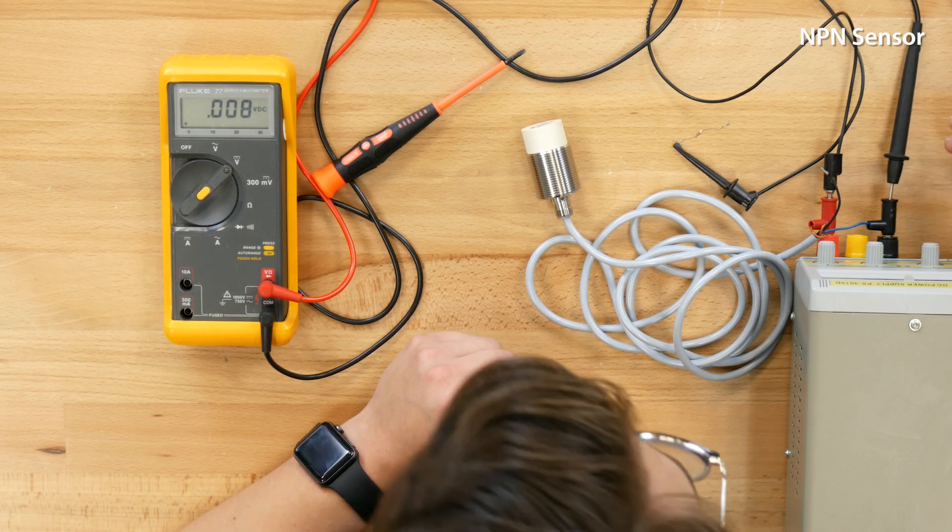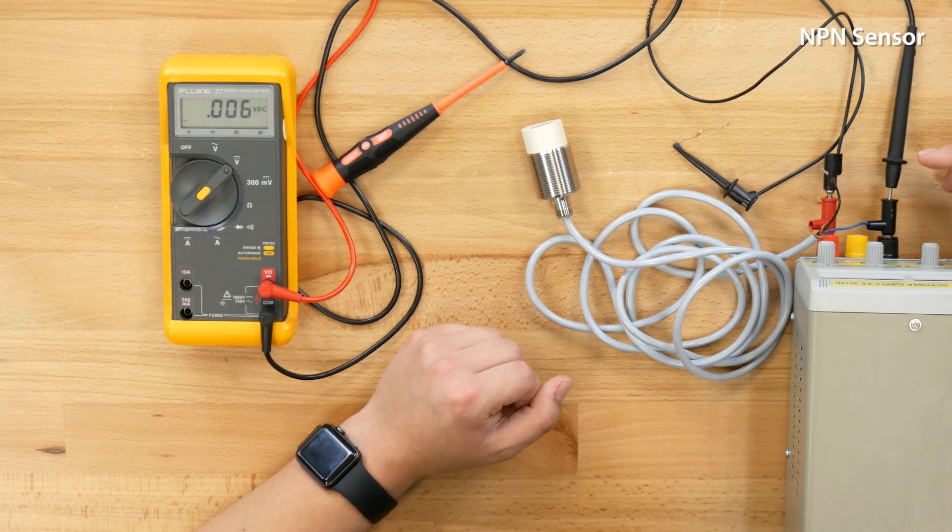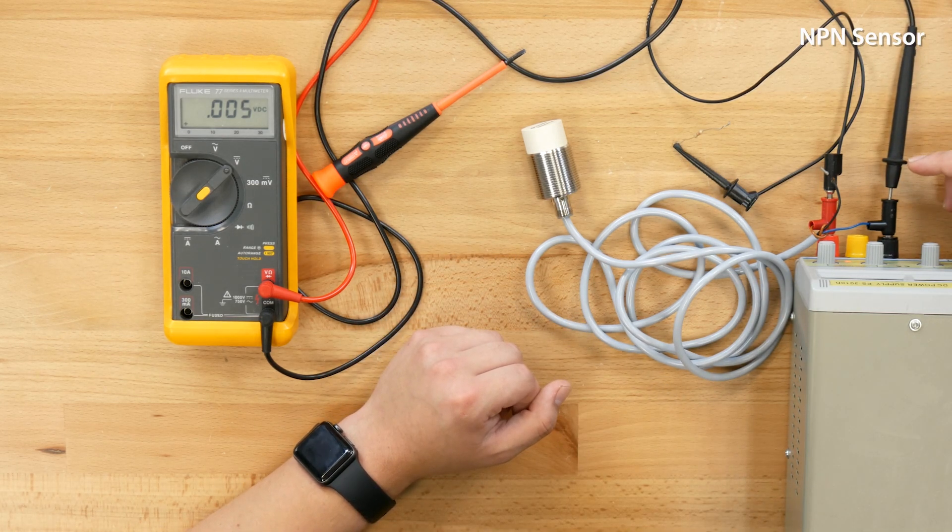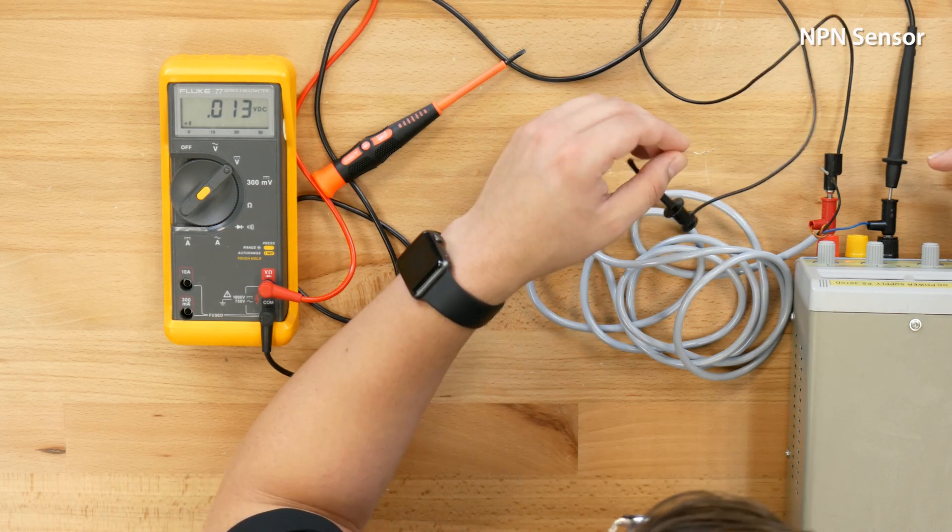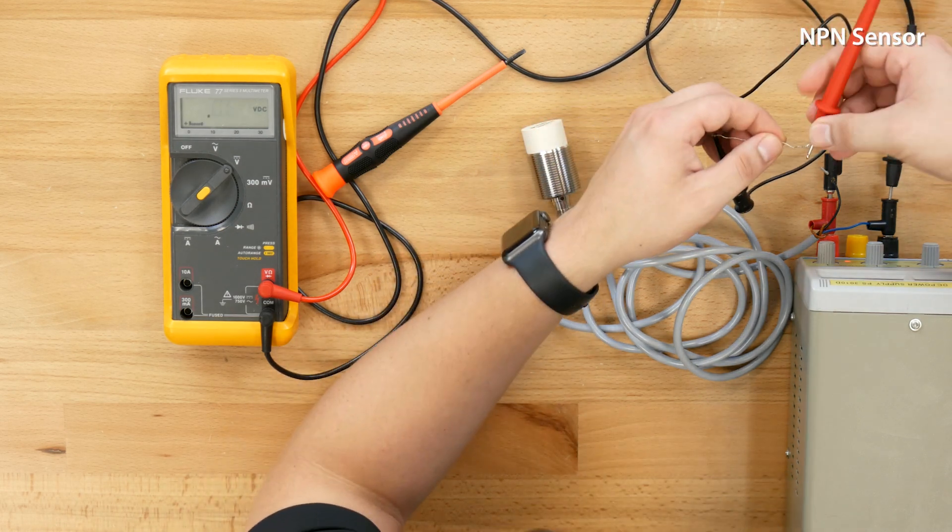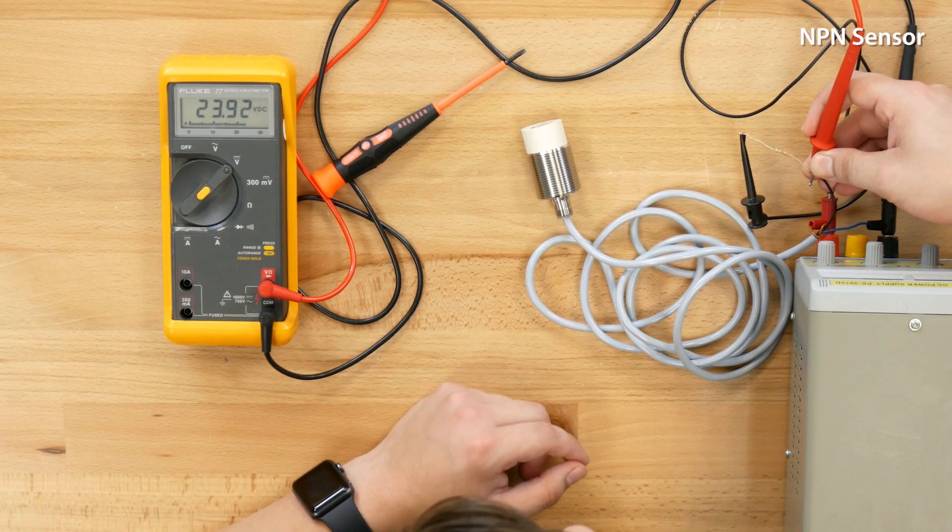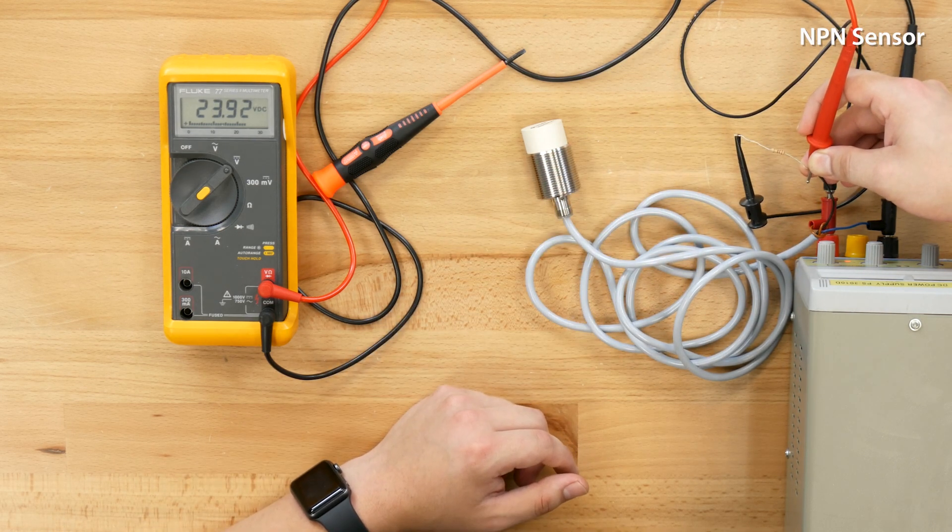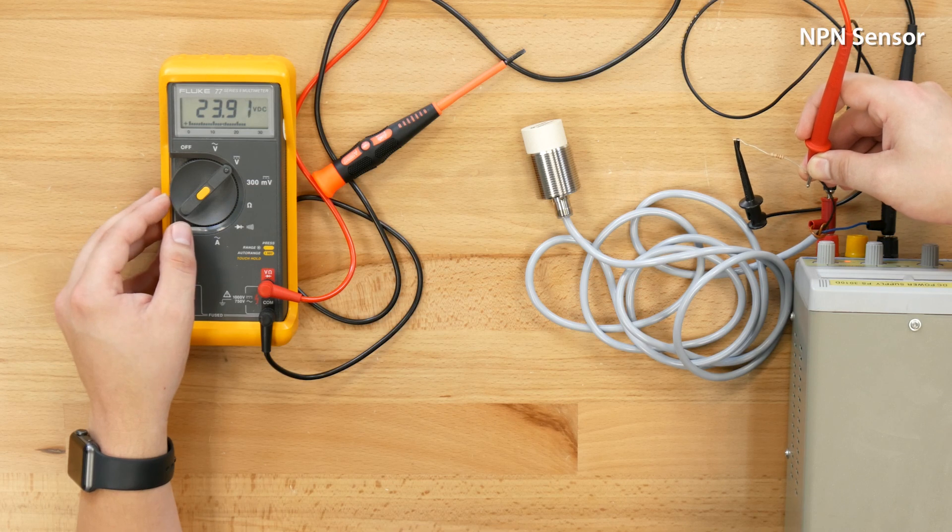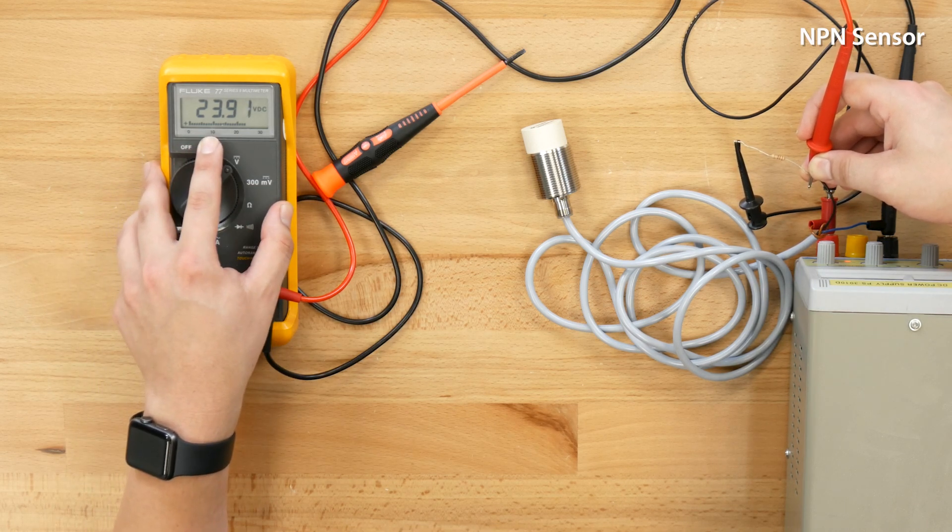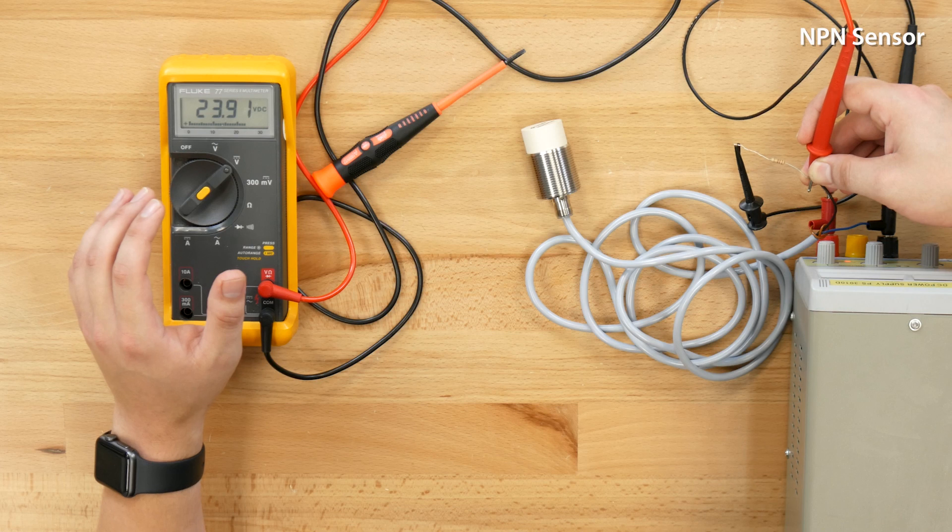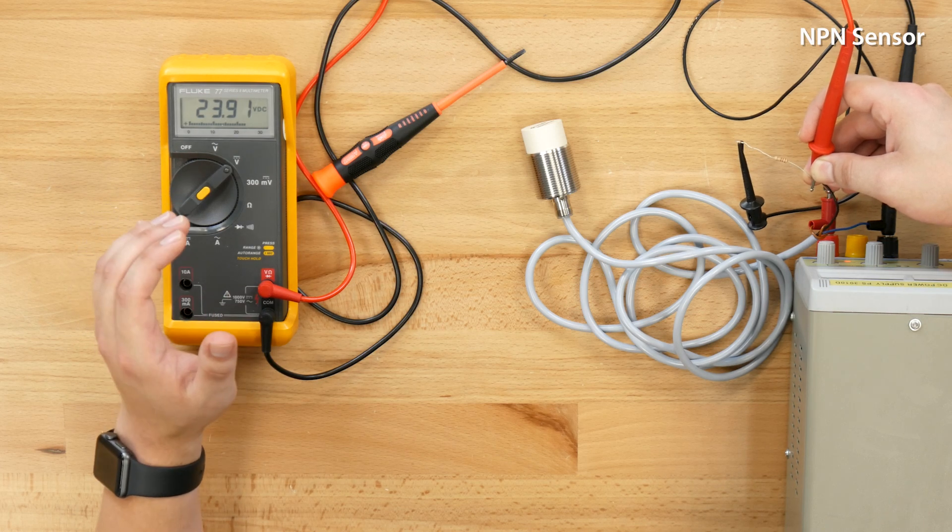We have our common for our multimeter going into the negative of the power supply so that way we're measuring against zero volts and we will take our other probe from our multimeter and connect that along with the resistor to our output. Now we can see that on our multimeter we're getting a signal of about 24 volts and this is what you would expect for an NPN sensor.